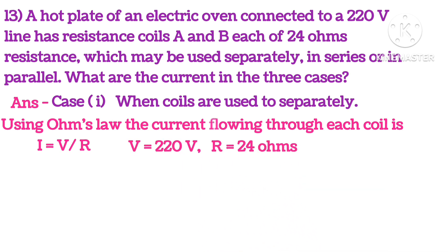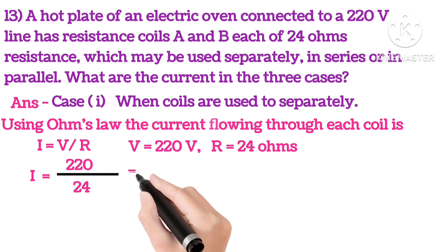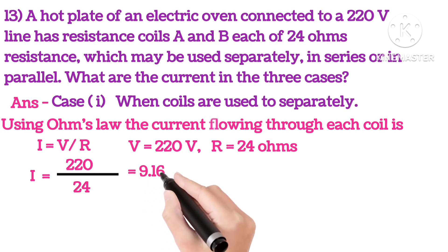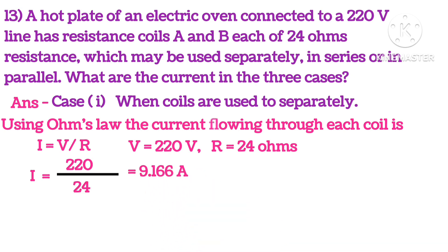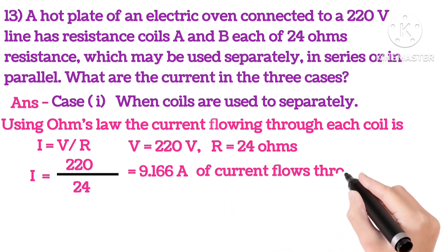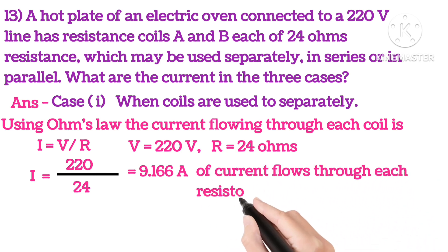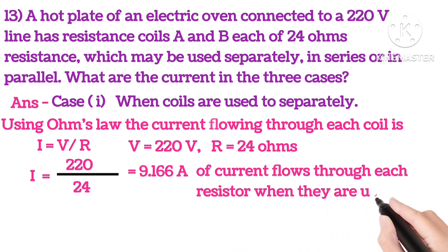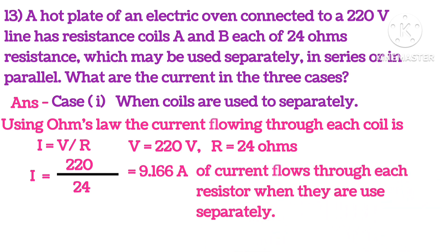So we know that V is 220 and resistance is 24. So putting in the value, we get the current 9.166 amperes of current flows through each resistor when they are used separately.